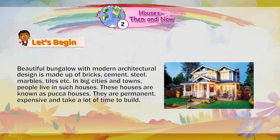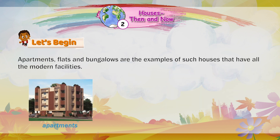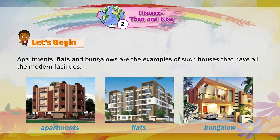A beautiful bungalow with modern architectural design is made up of bricks, cement, steel, marble, tiles, etc. In big cities and towns, people live in such houses. These houses are known as pakka houses. They are permanent, expensive, and take a lot of time to build. Apartments, flats, and bungalows are examples of such houses that have all the modern facilities.